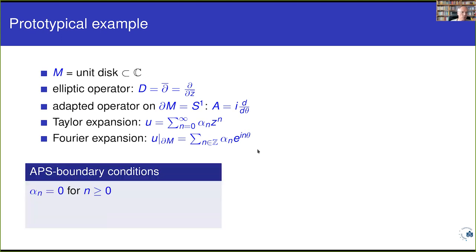Now, what kind of boundary conditions could we impose to get a good problem — for example, to get a Fredholm operator? For second-order operators, classical Dirichlet boundary conditions ask for the restriction to the boundary being zero, but for a first-order operator that's too strong. So we want something half as strong. The Atiyah-Patodi-Singer boundary condition does exactly that: it demands that among the Fourier coefficients of the restriction to the boundary, only those corresponding to non-negative eigenvalues are set to zero.